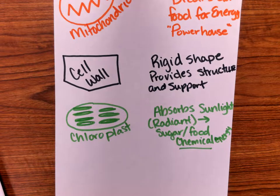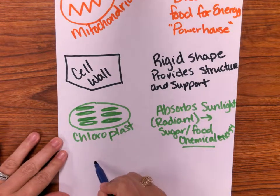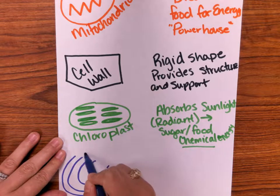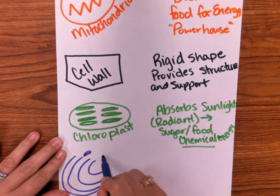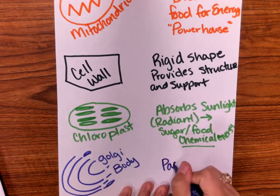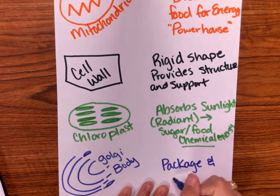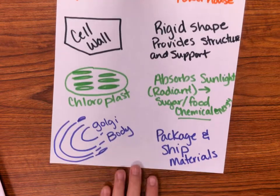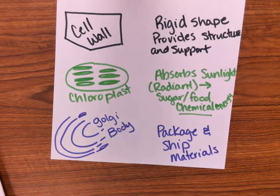For pre-AP students, the next organelle is the Golgi bodies, also called the Golgi complex. They look like little stacked inverted C-shapes with small pieces hanging off them. The Golgi bodies package and ship things the cell needs — specifically proteins. Think of them like UPS for the cell: they package and ship proteins.